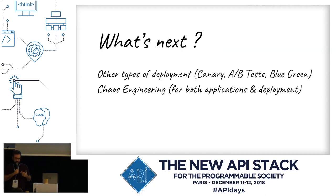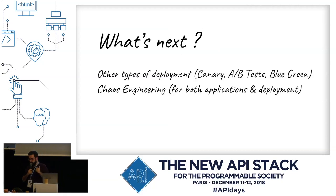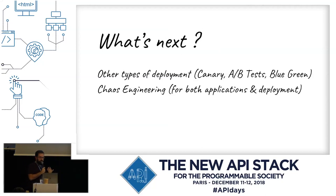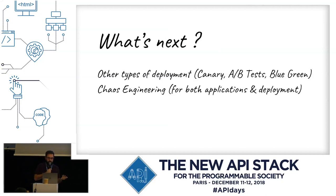Right now we have some projects on continuous deployment and some on continuous delivery, and we are progressively migrating them. What we want to do next is experiment with other types of deployment: canary testing — starting a new instance, redirecting a small part of traffic, and testing behavior — A/B testing, and blue-green deployment. This will be made easy by Kubernetes, potentially using a service mesh like Istio.